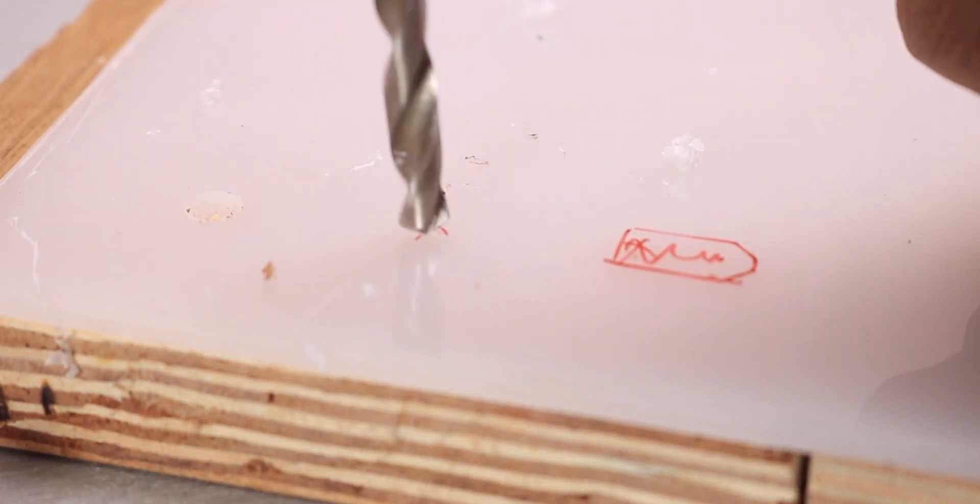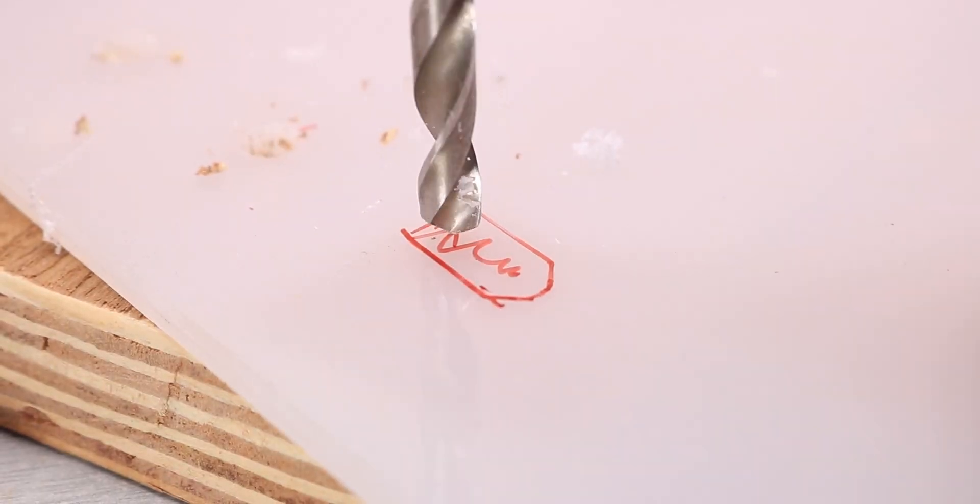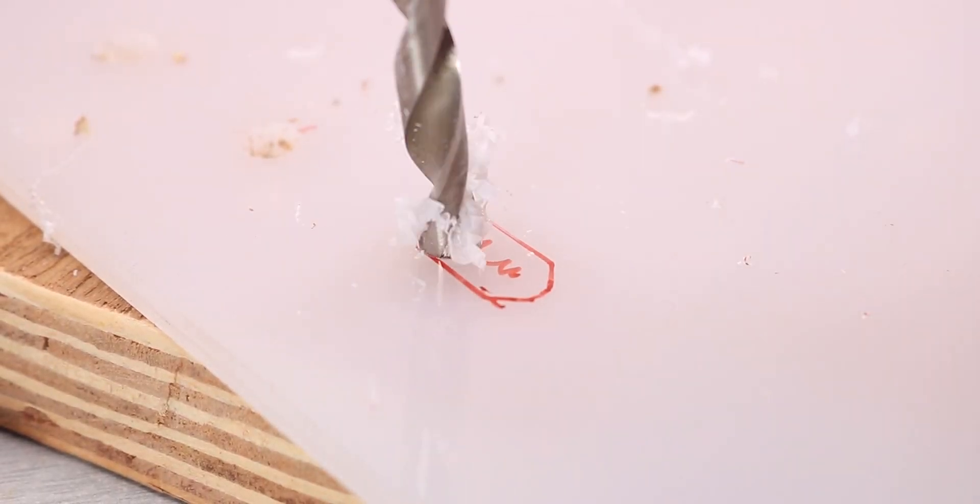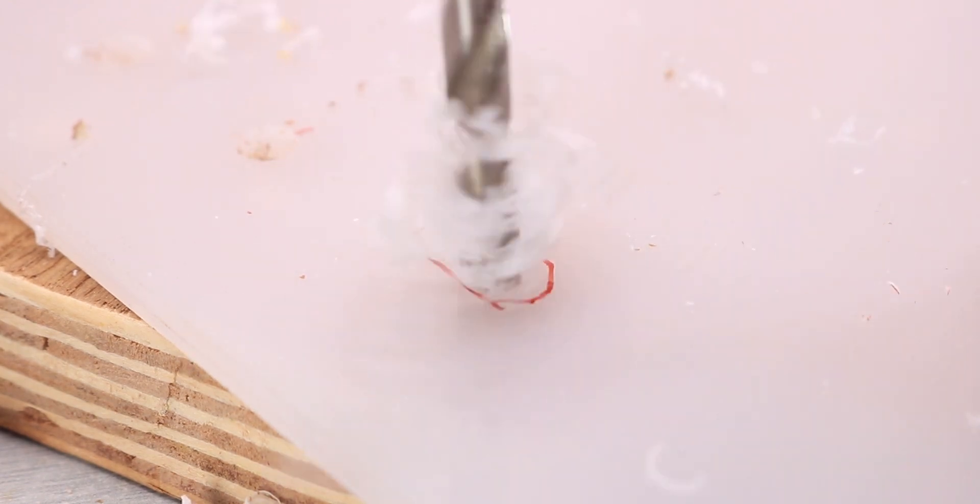Before attaching the back panel I drilled three holes in it. Two for the potentiometers and one for the XLR plug which we will use later on to power it. And since the XLR plug has an odd shape I had to use my files to get it to the right shape. Then I used some super glue once again to attach it.